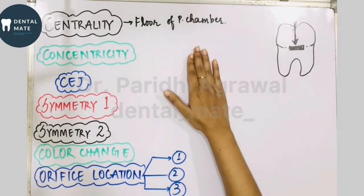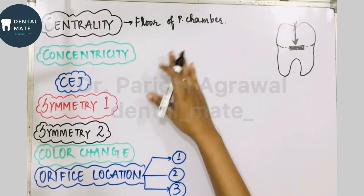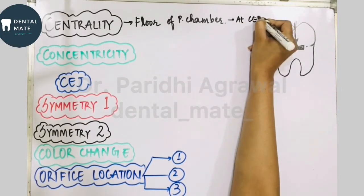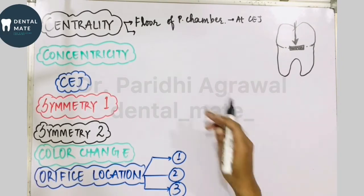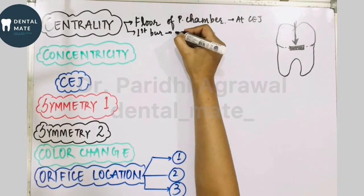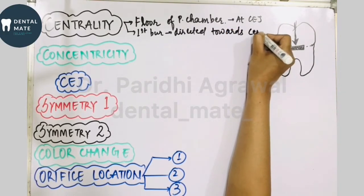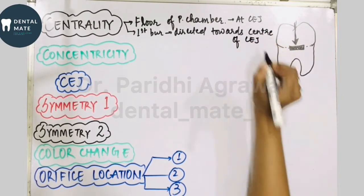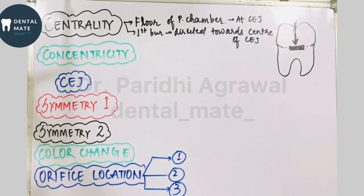The law of centrality also tells you how to penetrate with the bur. Whenever we are doing an access opening, the initial penetrating bur should always be directed towards the center of the cementoenamel junction — not the center of the crown, but the center of the CEJ. This is the law of centrality.